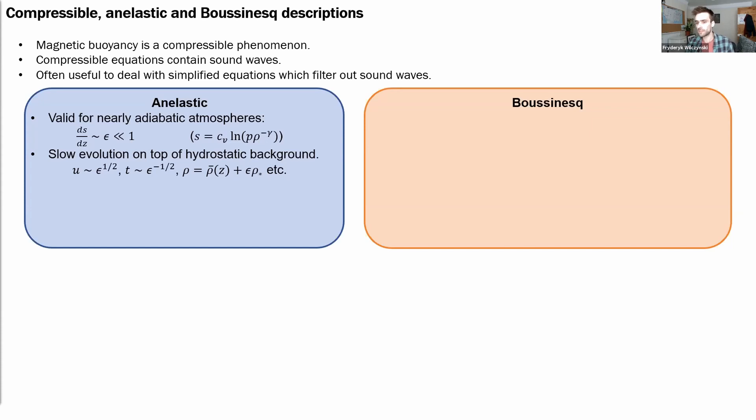A magnetic field can be included in the anelastic approximation in a straightforward way, provided that the field is weak and more precisely that the square of an Alfvén Mach number, which is a ratio of Alfvén speed to sound speed squared, is an order epsilon quantity.